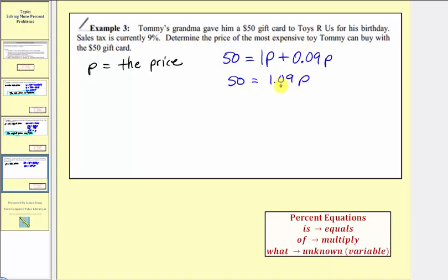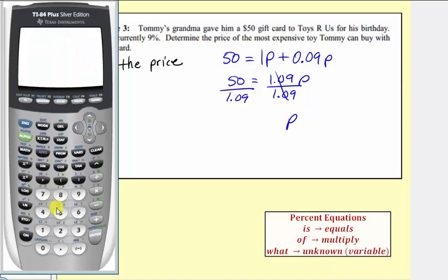To solve for p, we divide both sides by 1.09. Simplifying on the right, this simplifies to 1p or p. And now we'll find this quotient, which is 50 divided by 1.09. We'll round to the nearest penny, or two decimal places. So p is going to be approximately 45.87.